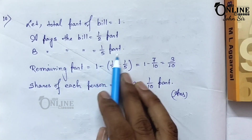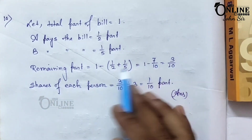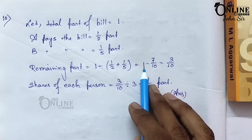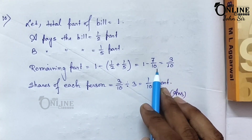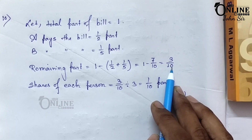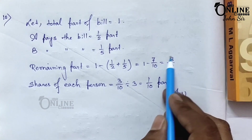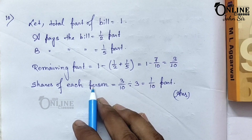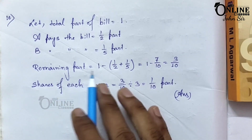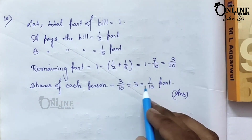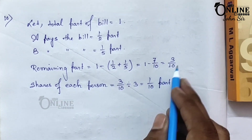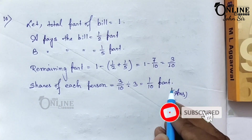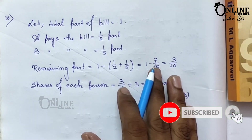Total part of the bill equals 1. A pays 1/2, B pays 1/5. Remaining part equals 1 minus (1/2 plus 1/5), which equals 1 minus 7/10, giving 3/10. This 3/10 was equally shared by C, D, and E, so each pays 3/10 divided by 3, giving 1/10. Therefore, each of C, D, and E paid 1/10 of the total bill.